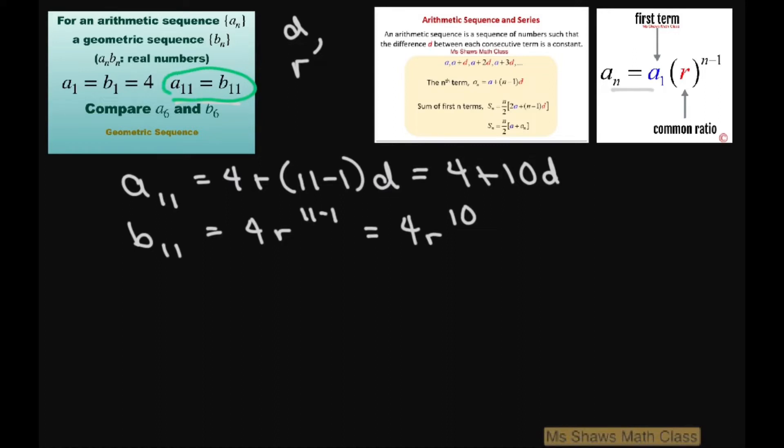Now the reason I chose these is because they equal each other, so we're going to set them equal to each other and solve for d. We have 4 plus 10d equals 4 times r to the power of 10. We're going to have 4r^10 minus 4, and then divide by 10, and this equals d.